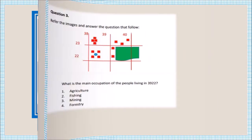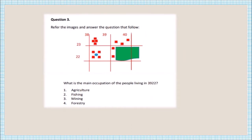Question number three: what is the main occupation of the people living in 3922? We can see green wash or green color here. Green color represents forest regions, so the occupation of the people is forestry.